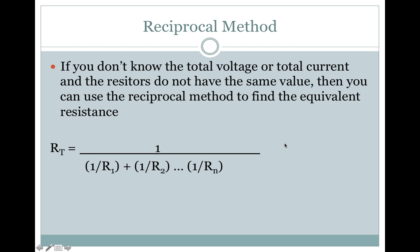The Reciprocal Method: If you don't know the total voltage or the total current and the resistors do not have the same value, then you can use the Reciprocal Method to find the equivalent resistance. The total resistance equals 1 over (1/R1 + 1/R2), and so on down to however many resistors you have.